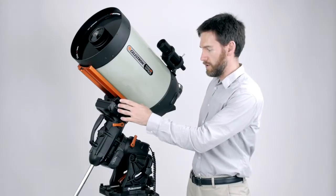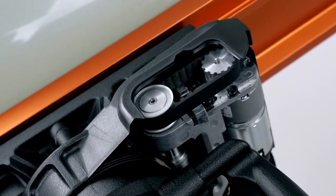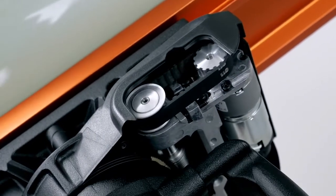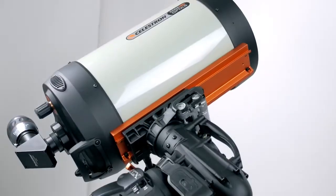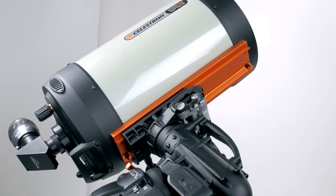The motors are driving the worm gears with pulleys and belt drive, as opposed to spur gear, and that's going to minimize the backlash. So as a result, you're going to notice a mount that's much more responsive, especially for astro-imaging.